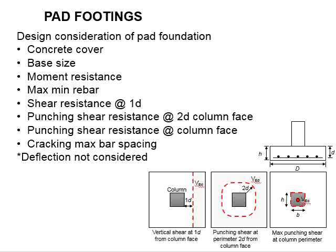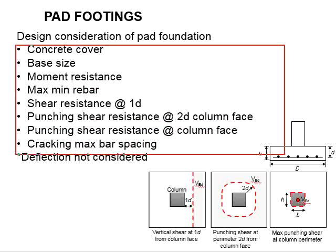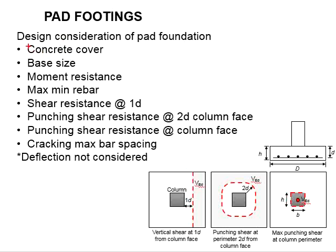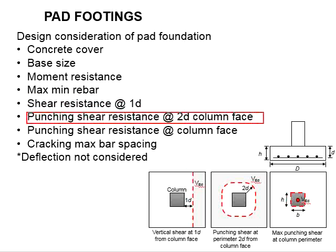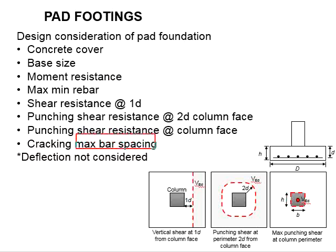This slide outlines the design considerations of a pad footing. These are the considerations you need to check in order to ensure the stability of the foundations, which include the concrete cover, the base size, the moment resistance, the maximum and minimum rebar area, the shear resistance at 1D, the punching shear resistance at 2D from the column face, the punching shear resistance at the column face, and the maximum bar spacing for cracking resistance.